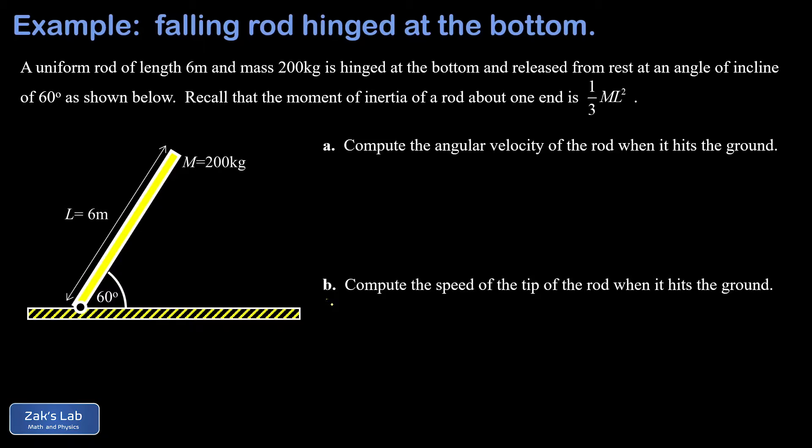This is an energy conservation problem and the key to it is to remember how the potential energy of a rigid body relates to the height of the center of mass. As it turns out, the gravitational potential energy is equal to the mass times g times the y coordinate of the center of mass of that object.